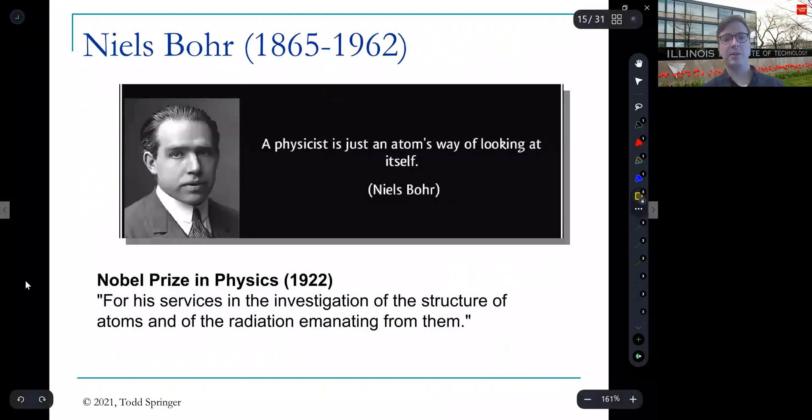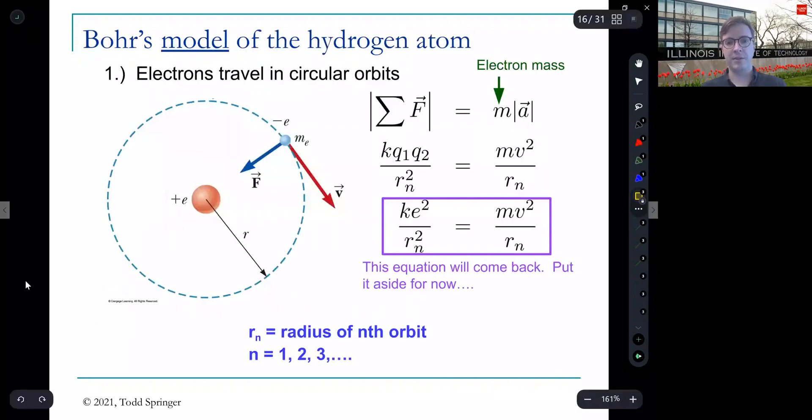So here comes Bohr. This is Niels Bohr, one of the founders of quantum mechanics. And he won the Nobel Prize in 1922, exactly for this, for his services in the investigation of the structure of atoms and of the radiation emanating from them, meaning the spectral lines. And here's his attempt at explaining this. So he comes up with a model. And here's his model of the hydrogen atom. So let's imagine a hydrogen atom. Let's take this planetary model where the electron is orbiting around the proton in the center of the hydrogen atom.